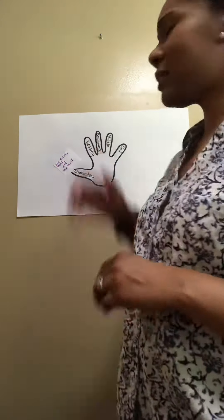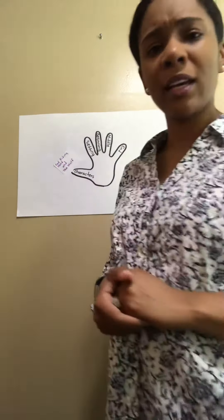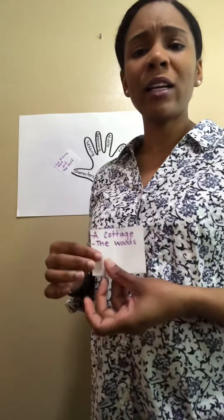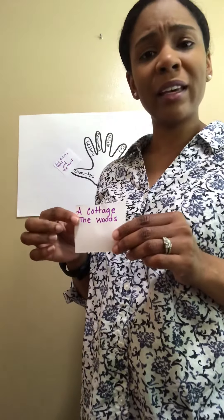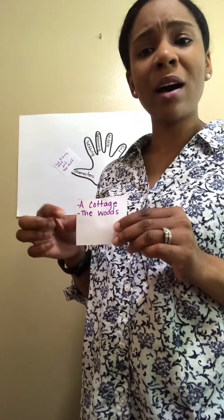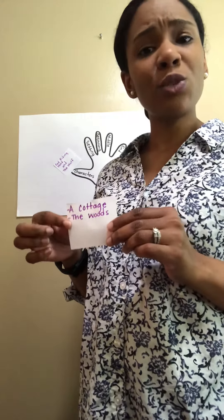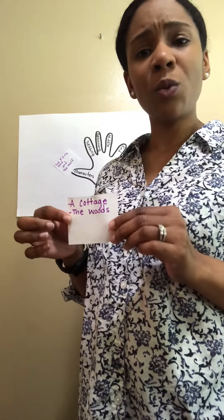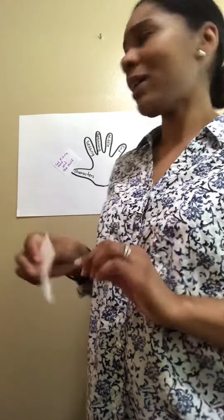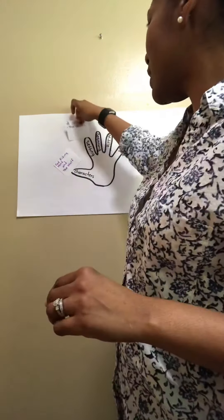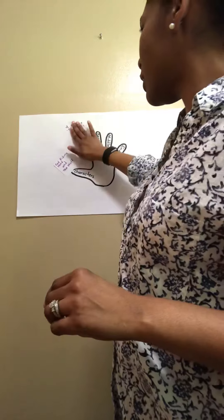All right, now let's think about the setting of the story. Where did that story take place? I hope you're thinking about a cottage, because that's where Red Riding Hood lived and Grandma, and the cottage was located in the woods. We're going to make that the setting of our story.